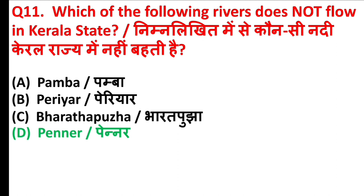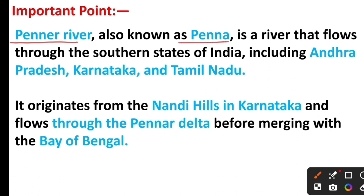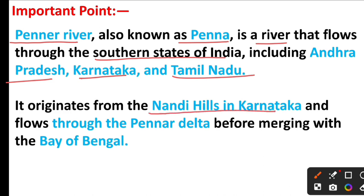Which of the following rivers does not flow in Kerala state? The answer is Option D, Pennar. The Pennar River, also known as Penna, is a river that flows through the southern states of India including Andhra Pradesh, Karnataka, and Tamil Nadu. It originates from the Nandi Hills in Karnataka and flows through the Pennar Delta before merging with the Bay of Bengal.